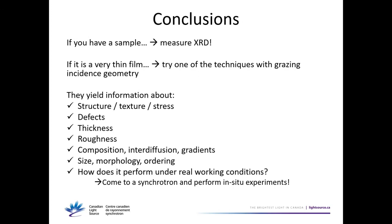An audience member asks about the refraction correction for Bragg peaks. The formula is known and could be applied manually, which would be annoying. It's something the speaker hopes will be added to software soon. It's important for more grazing angles — there's a reference paper with a graph showing how it gets really important when the angles are really grazing.